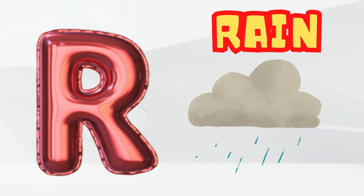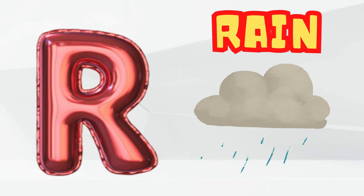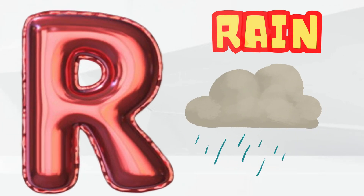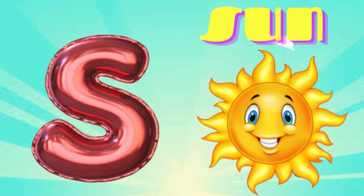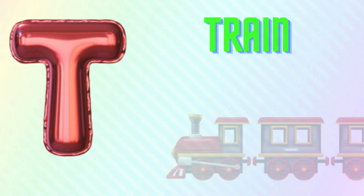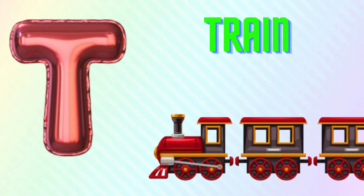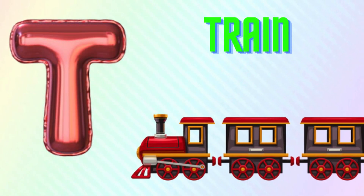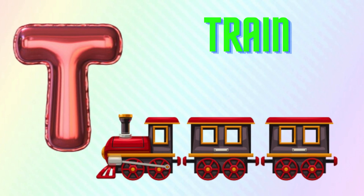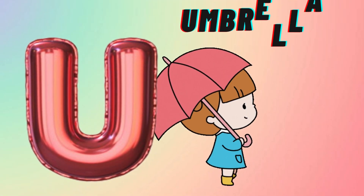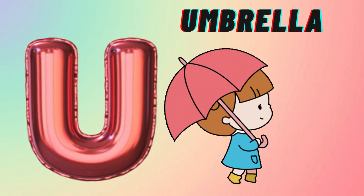R for rain. S for sun. T for train. U for umbrella.